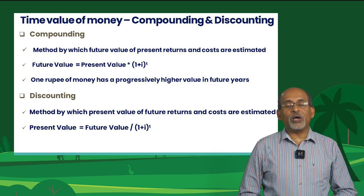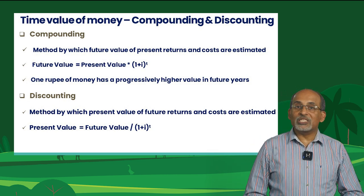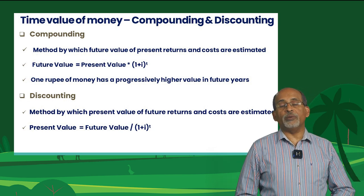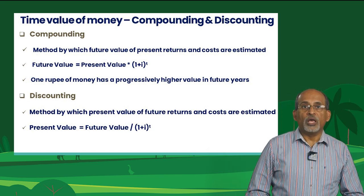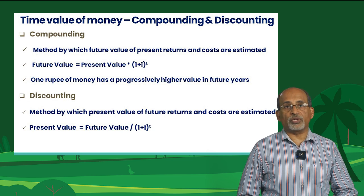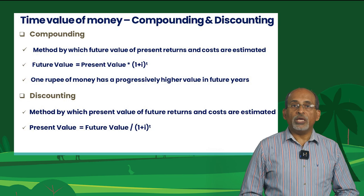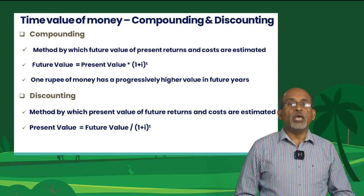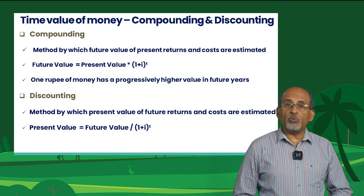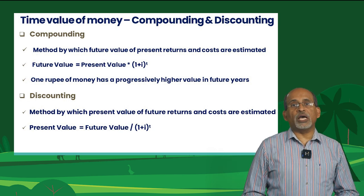The basic idea of compounding and discounting is that a rupee received now does not necessarily have the same value as a rupee received a year from now. An individual's choice of a particular allocation of money over time is called his or her time preference. A person's time preference is assumed to be measurable at some rate of interest. Thus, 1 rupee today exchanges for (1 + i) rupees at the end of period 1 in the future. Compounding is the process of finding the future value of a present amount. Future value equals present value multiplied by (1 + i) raised to the number of years, where (1 + i) is the compounding factor.